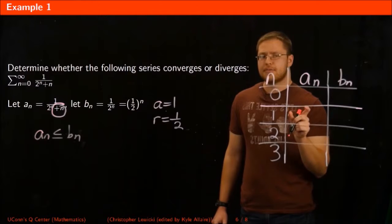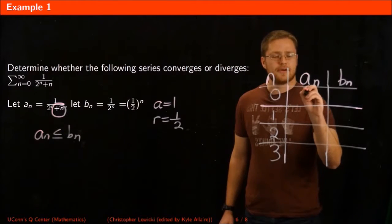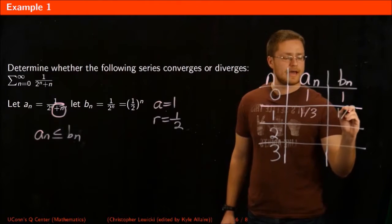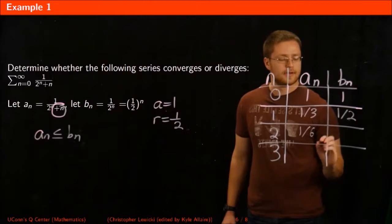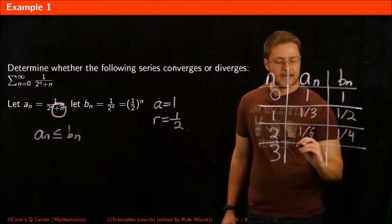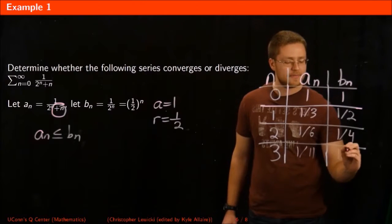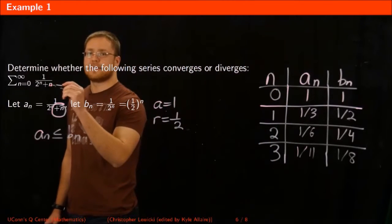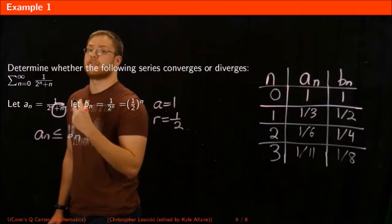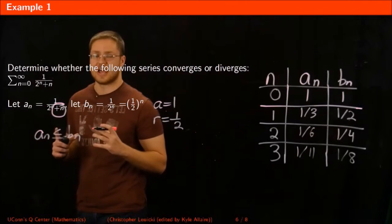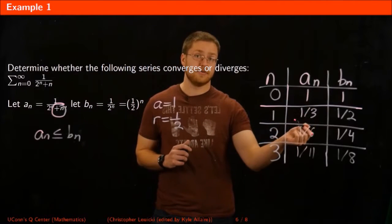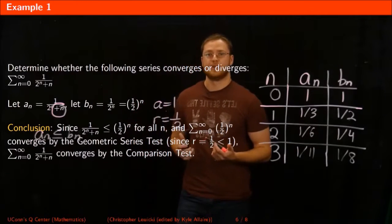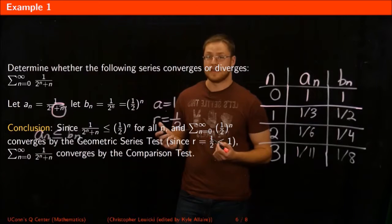Using a table of values: substituting N=0 gives 1 for both; N=1 gives 1/3 versus 1/2; N=2 gives 1/6 versus 1/4; N=3 gives 1/11 versus 1/8. Because An has this additional plus N in the denominator, its denominator is always larger, causing the fraction to always be less than or equal to all terms in Bn. So I can conclude, using the comparison test, that the series An has to converge.